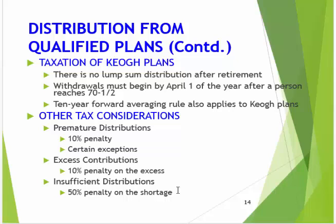There are TO plans, essentially for self-employed individuals and entrepreneurs. These are special kinds of retirement plans tied to IRA vehicles, and you have to start withdrawals at 70 and a half. Premature distributions are penalized 10%. There are some exceptions to that, but in general, premature distributions are a challenge.